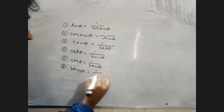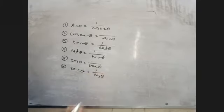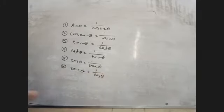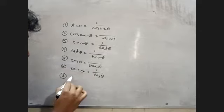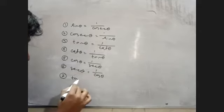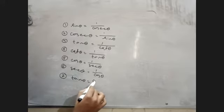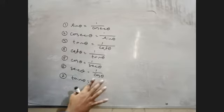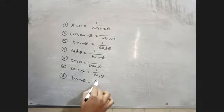Number 2 is cos theta. We have tan theta equals 1 by cos theta, and 1 by cos theta of sin theta.